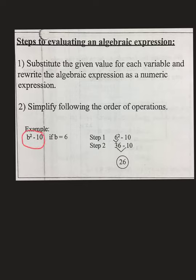all the first step tells you to do is take your expression, so in this case b squared minus 10, and it tells you b equals 6. Our key point here is to substitute 6 into our expression where b is. If you look, it says step one, and instead of b, we put our 6. So instead of b squared minus 10, we have 6 squared minus 10, which is our new expression.